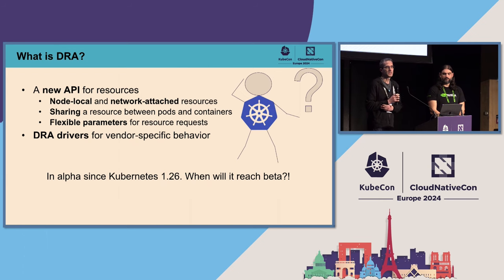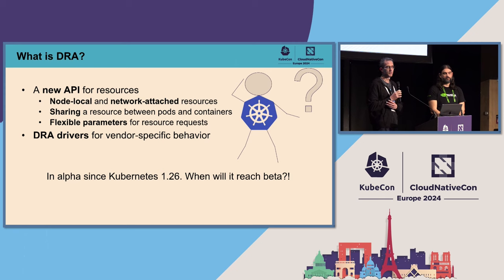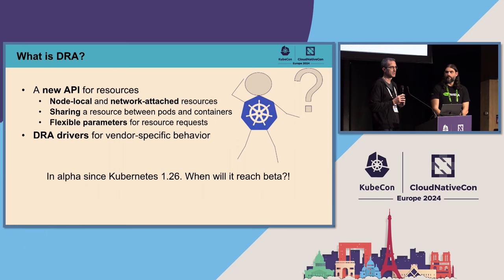The key point is that DRA in Kubernetes is just a framework. It enables hardware vendors to extend Kubernetes by writing DRA drivers. These DRA drivers are responsible for the hardware and also for the user-facing interface — how to specify parameters depends on the hardware you are asking for. It has been in alpha for a while, and we've been trying to get it to beta, and I got some feedback from the community.